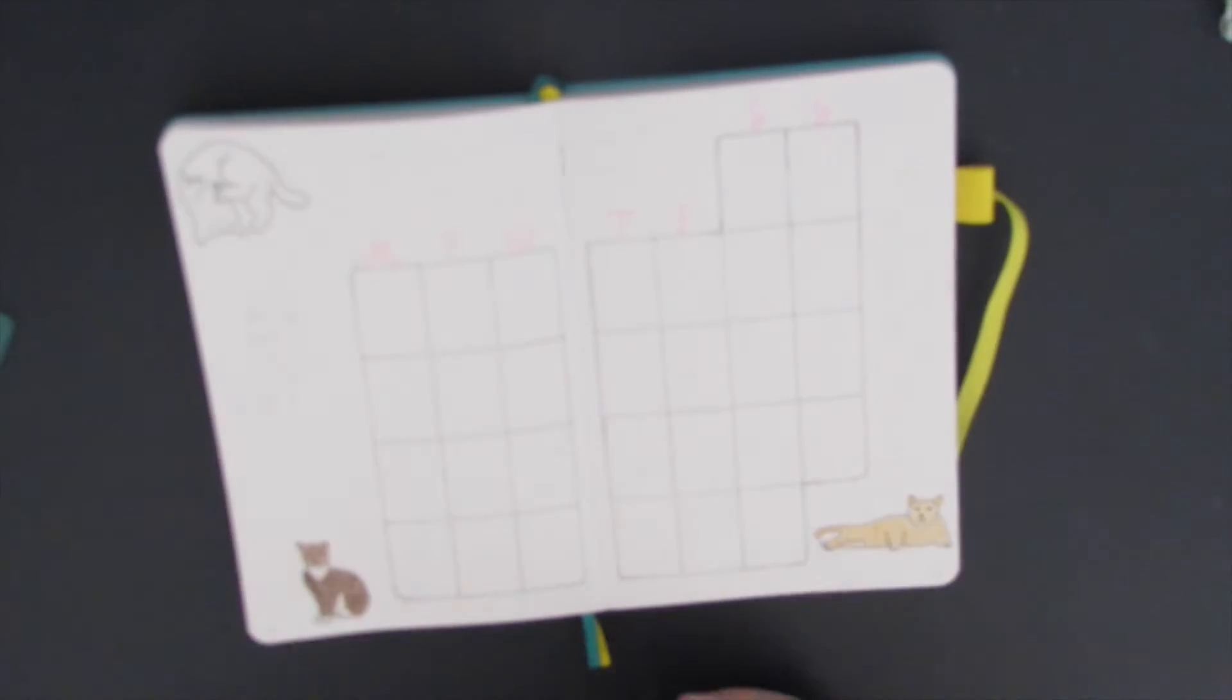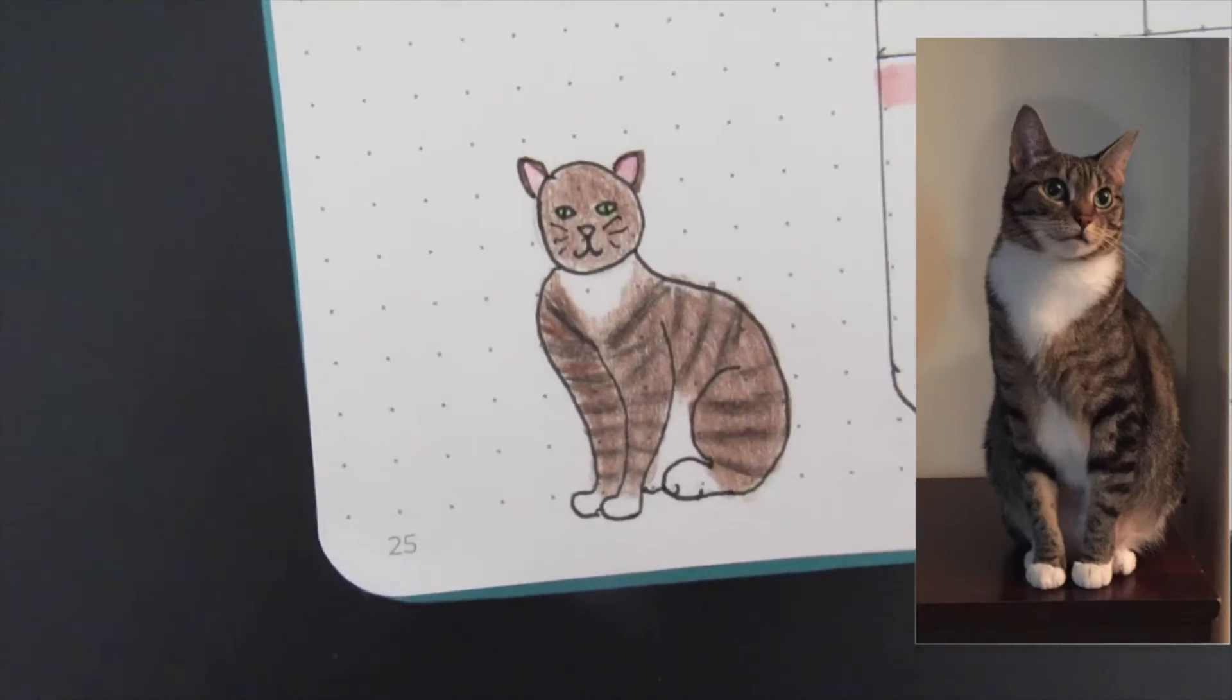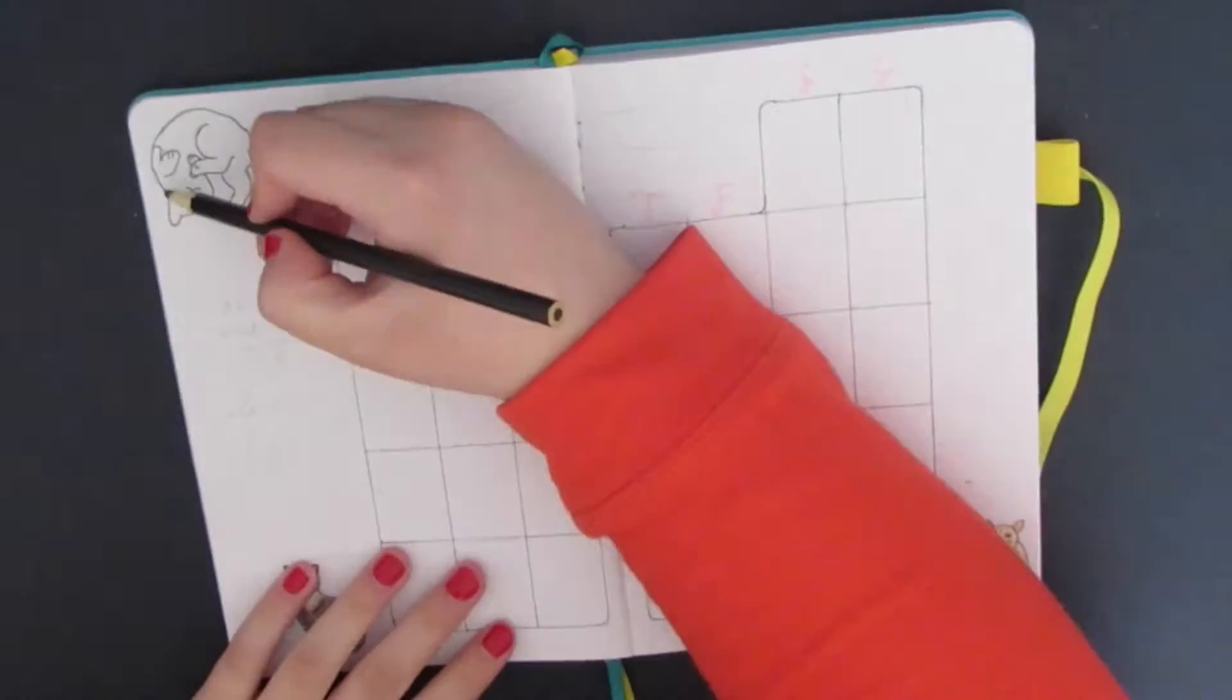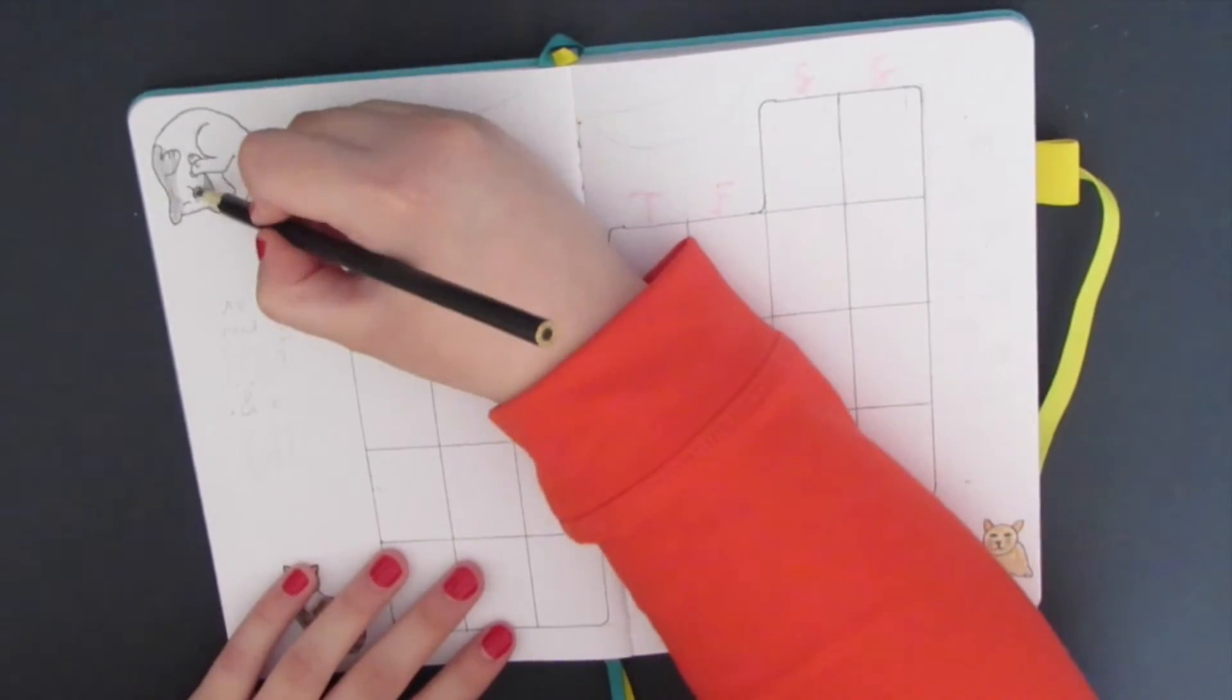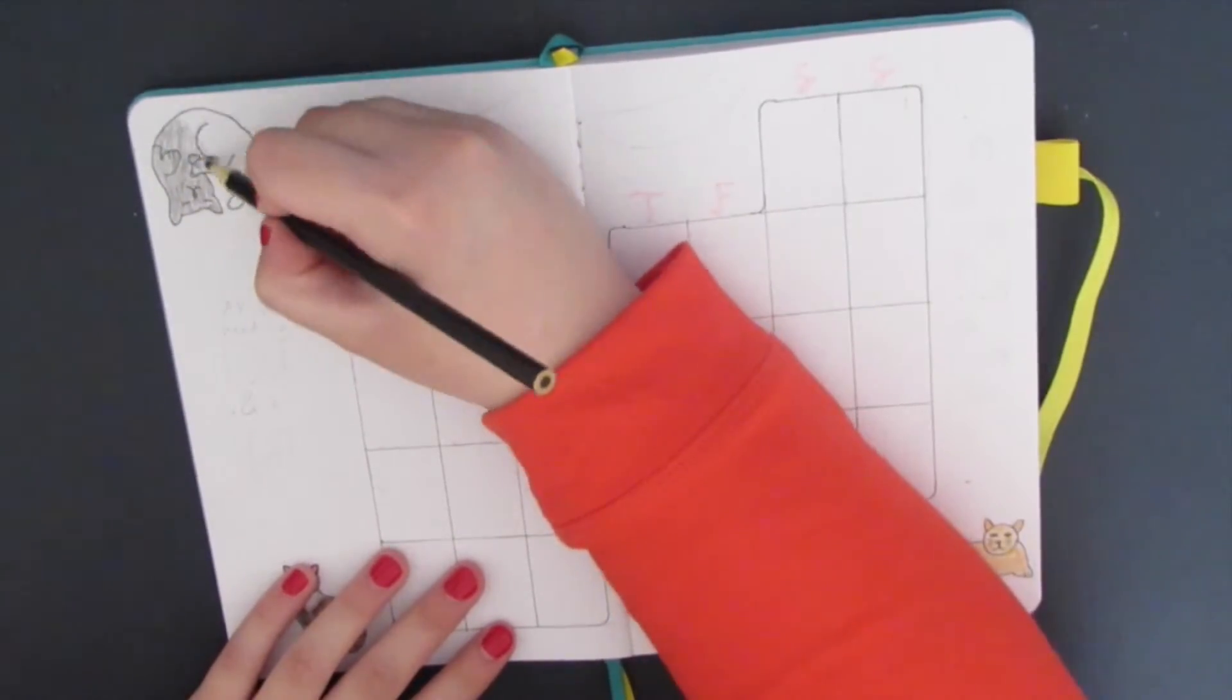These two cats in the corner are based on my two cats. As you can see, my drawing doesn't do them justice. I don't have a gray cat, but I thought this space was empty, so I added a little kitty in the corner.